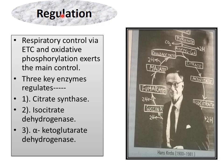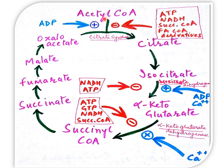TCA cycle is regulated by three key enzymes: citrate synthase, isocitrate dehydrogenase, and alpha-ketoglutarate dehydrogenase. Citrate synthase is inhibited by ATP, NADH, succinyl coenzyme A, and fatty acyl coenzyme A derivatives, while ADP stimulates this conversion. The isocitrate to alpha-ketoglutarate reaction is stimulated by ADP and calcium, and inhibited by NADH and ATP. The conversion of alpha-ketoglutarate to succinyl coenzyme A is stimulated by calcium, but inhibited by ATP, GTP, NADH, and succinyl coenzyme A.